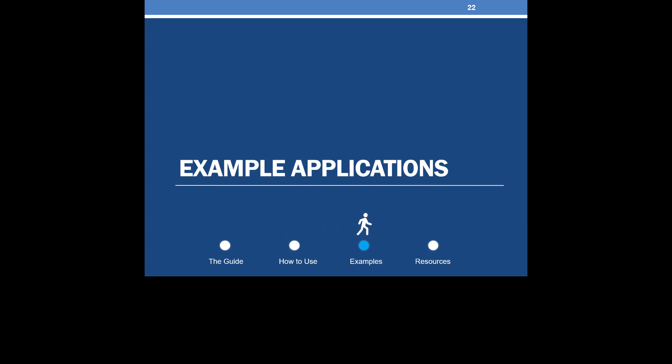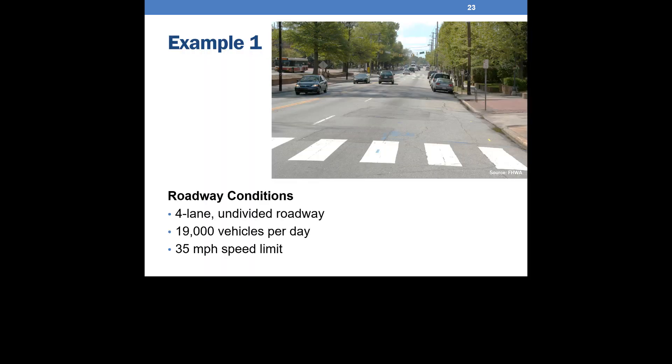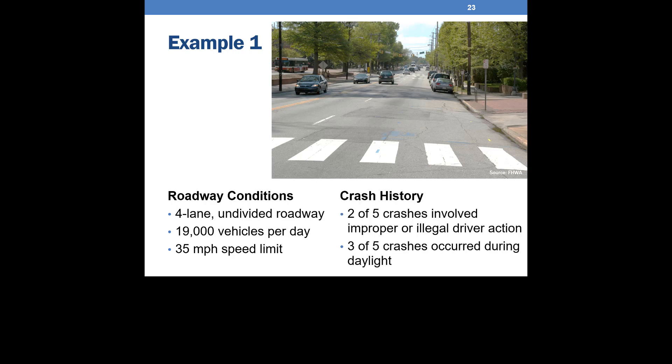Let's go through some examples to practice using the tables and selecting countermeasures to improve pedestrian safety at uncontrolled crossing locations. Consider the corridor shown. The road is four lanes, undivided, and serves approximately 19,000 vehicles per day. The speed limit on the corridor is 35 miles per hour. After analyzing the pedestrian crash history on the corridor, we find that two of five pedestrian crashes involved improper or illegal driver action, while three of five crashes occurred during daylight. Take a moment to remember or write down these details.